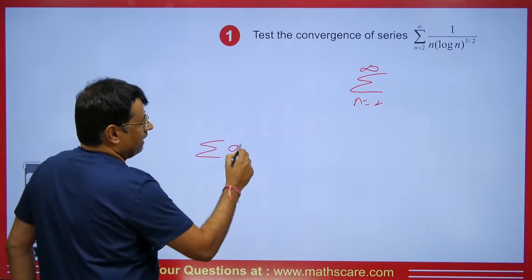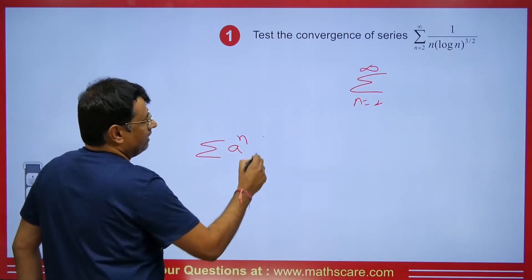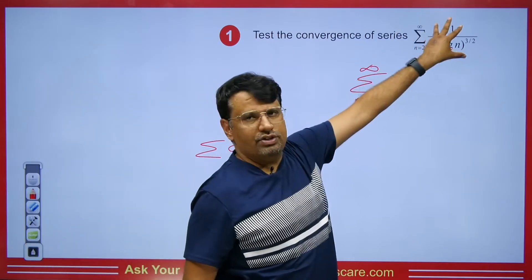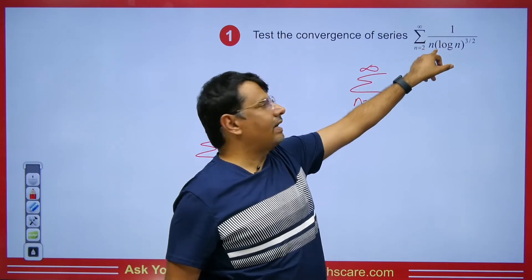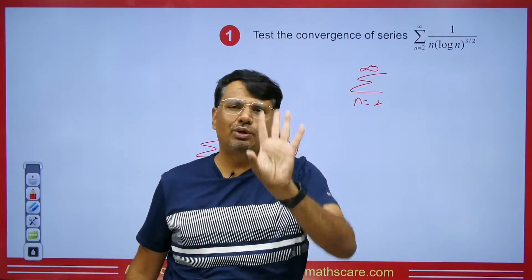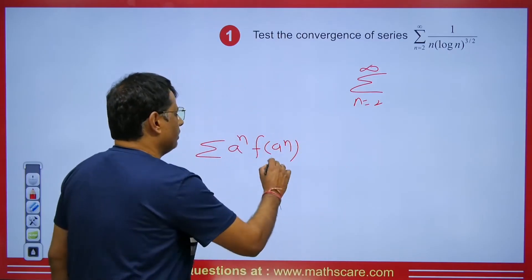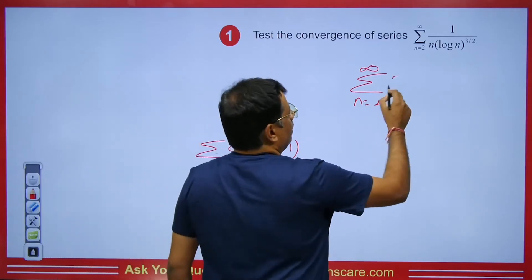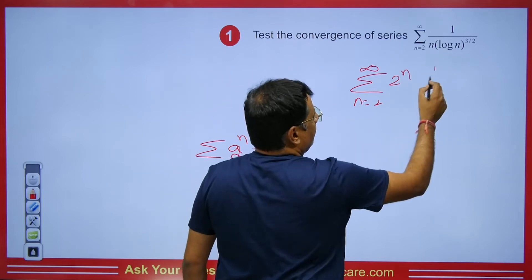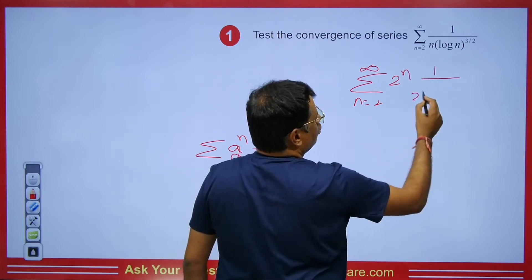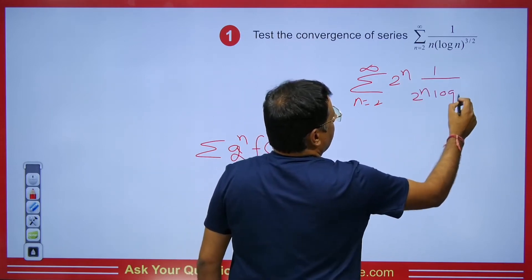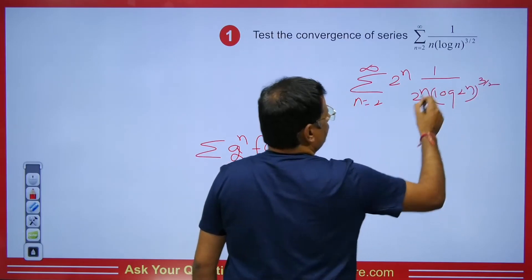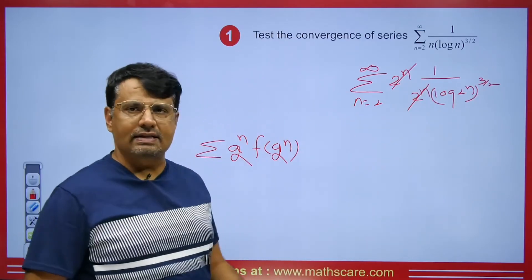We will write summation n = 2 to infinity. The series will be written as a^n · f(a^n). Wherever n appears, we put 2^n. So we write 2^n and replace n with 2^n wherever it appears. Then 2^n and 2^n cancel out, and we get summation n = 2 to infinity.